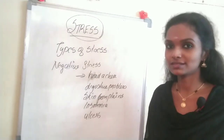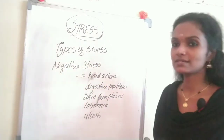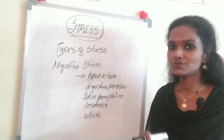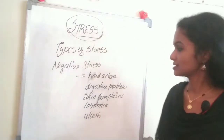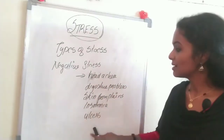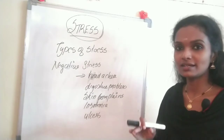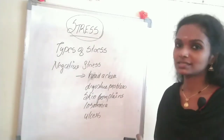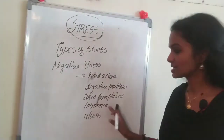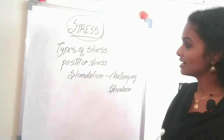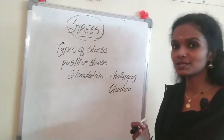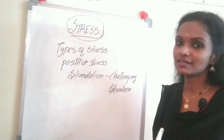We discussed the types of stressors — the factors which influence stress. Now we learn about the types of stress. The first type is negative stress. If stress is unrelieved for prolonged days, it can contribute to minor diseases such as headache, digestive problems, skin complaints, insomnia, and ulcers. If you have stress that is unrelieved, express it to someone and remove the stress from your body. The second type is positive stress, which acts as a stimulation for challenging situations, creating a sense of urgency and alertness needed for confronting threatening situations.